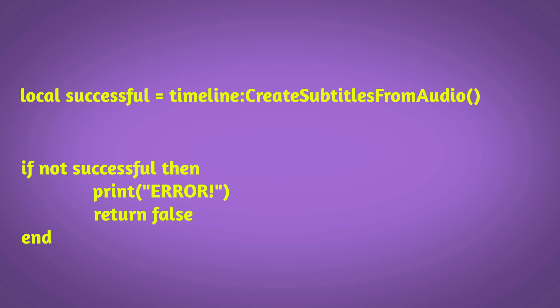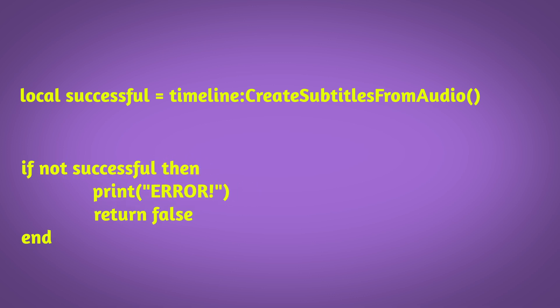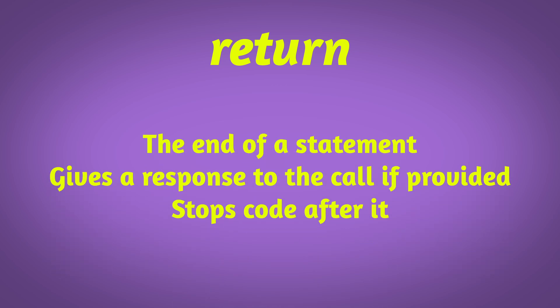The API can send information back to us — for example, a boolean true or false — and we can say if this was successful, continue; if not, throw an error and return so we don't continue the rest of our code. Return not only sends something back to the caller, but it also ends whatever happens below it. So return is always the last thing in a function.